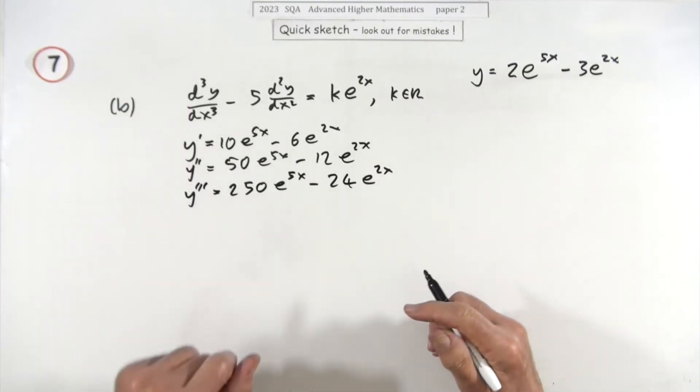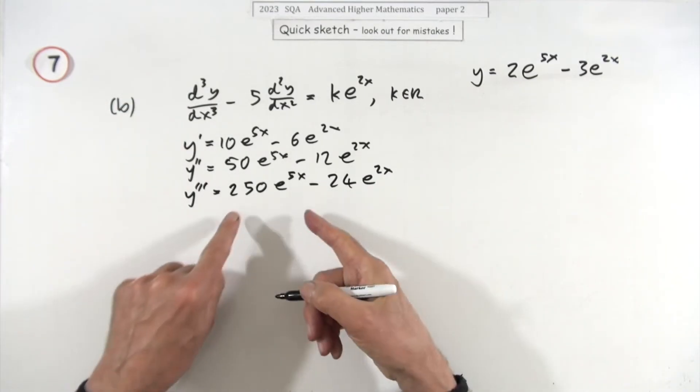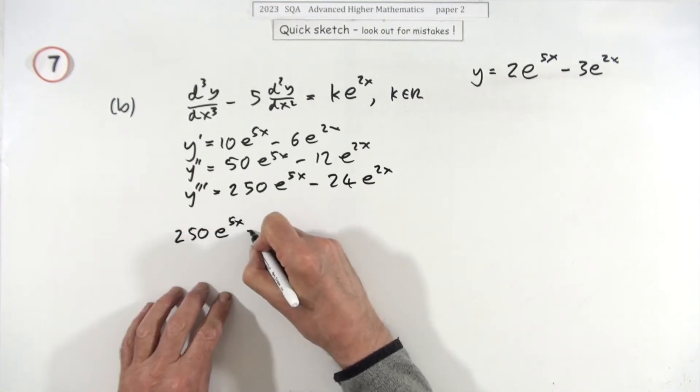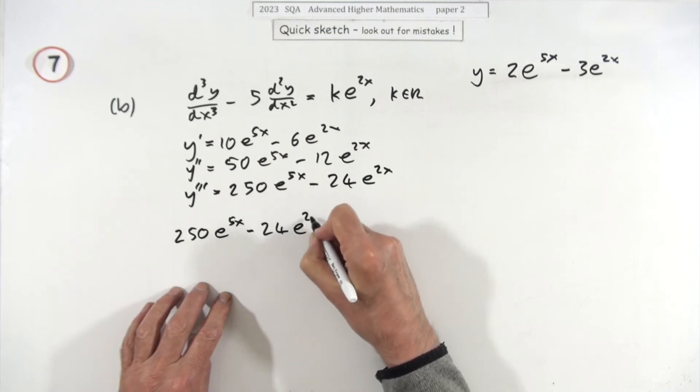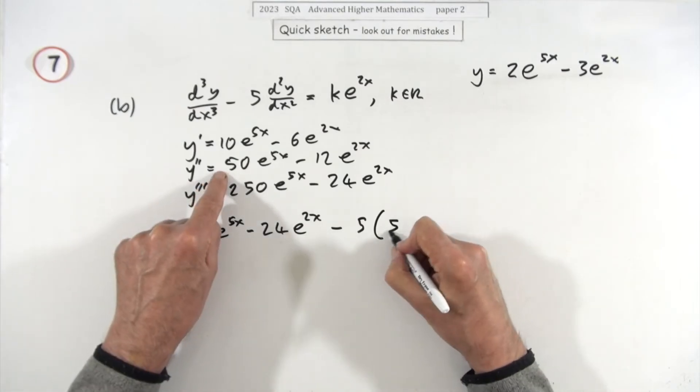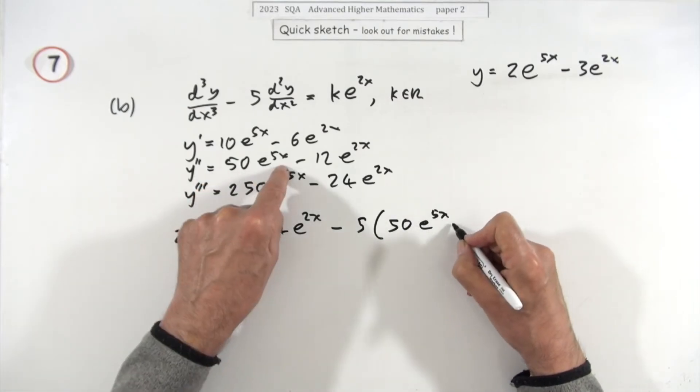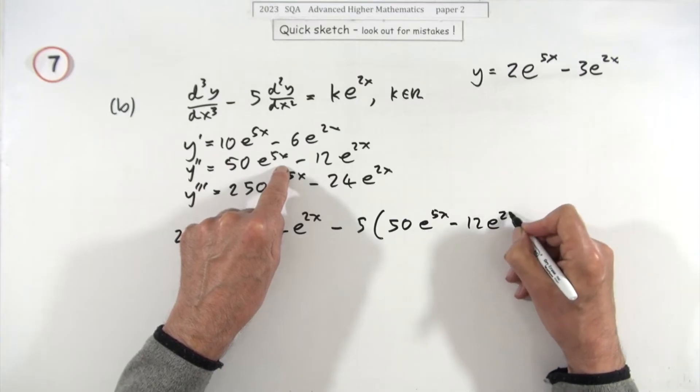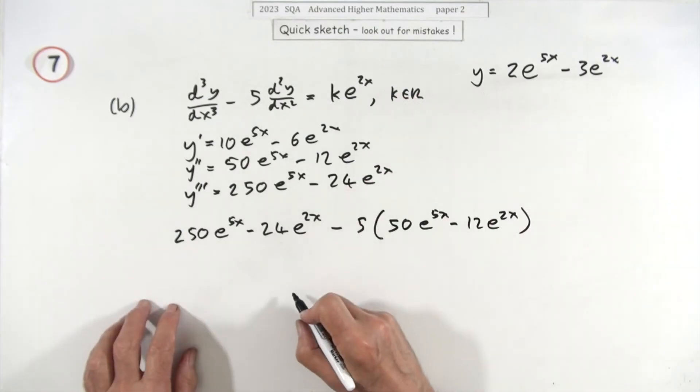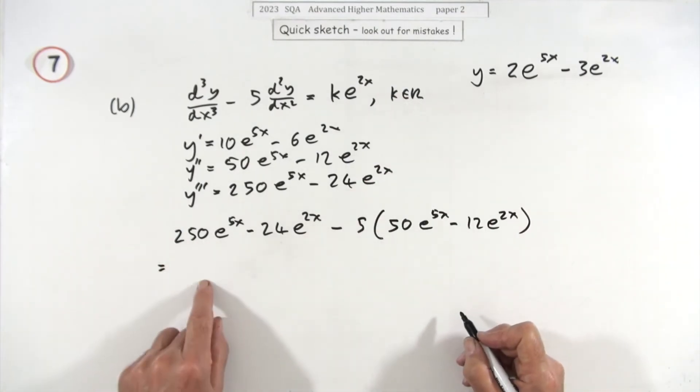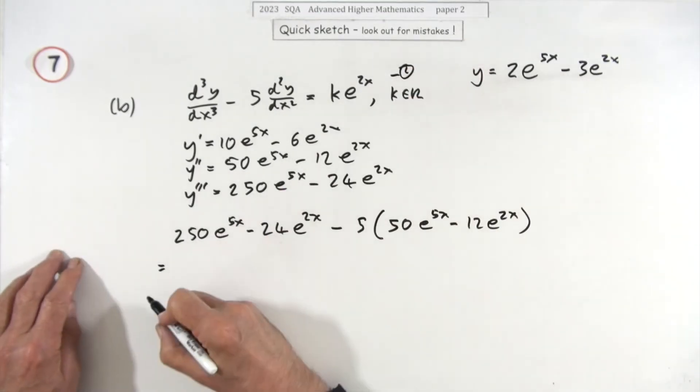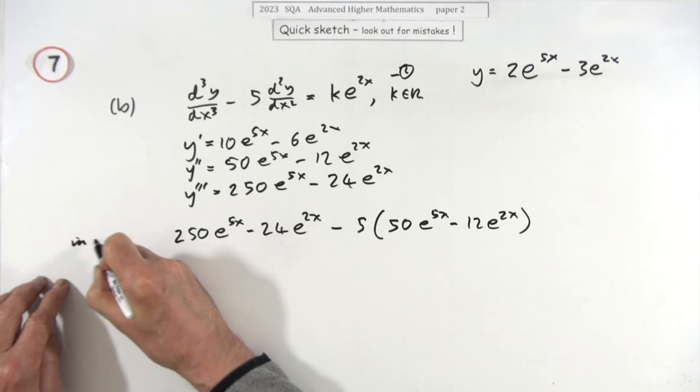Now just feed it into that and see what you get. So I just want that 250e to the 5x minus 24e to the 2x minus five lots of now this one, 50e to the 5x minus 12e to the 2x, should come to something like that, but I'll wait and see where it comes to. And hopefully it will be something like that. All right, so what does that come to? Maybe I should see something like in this part here.